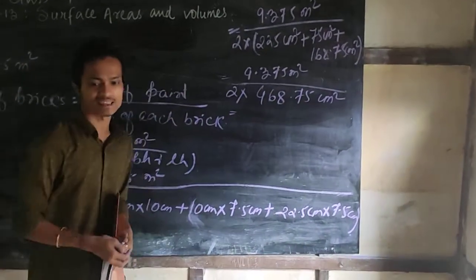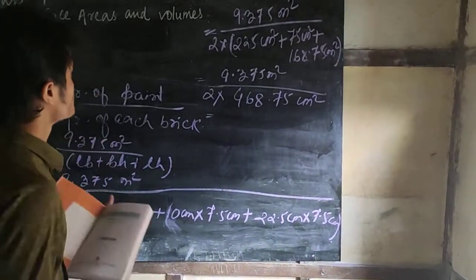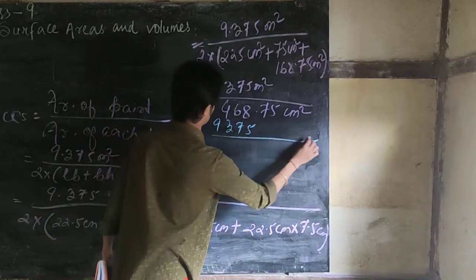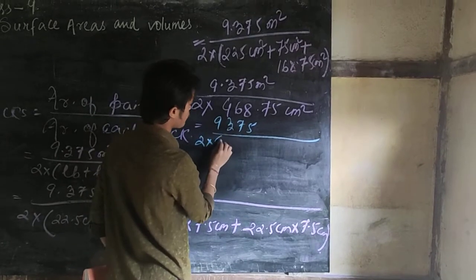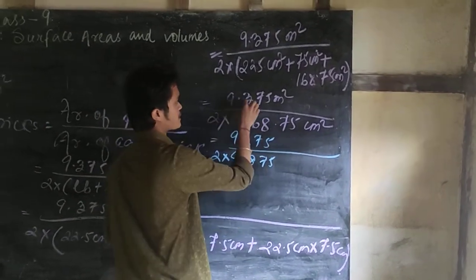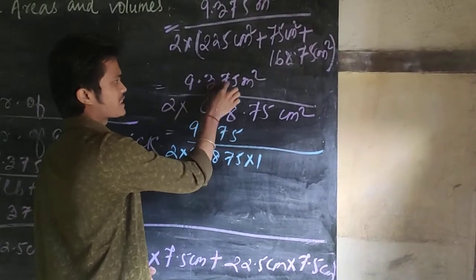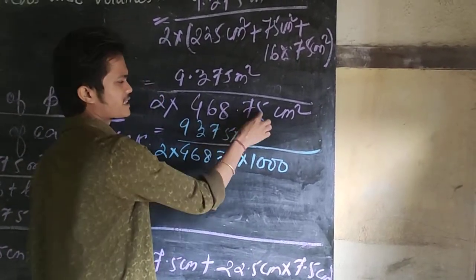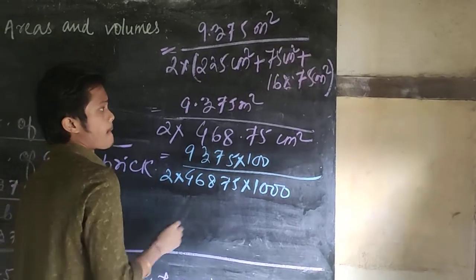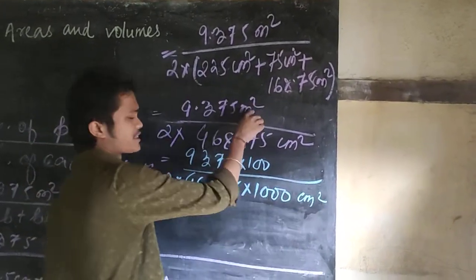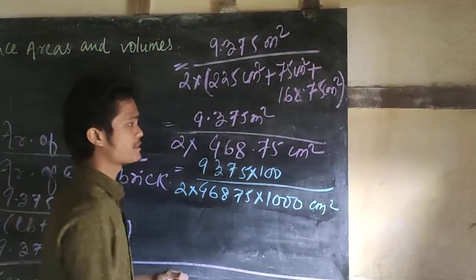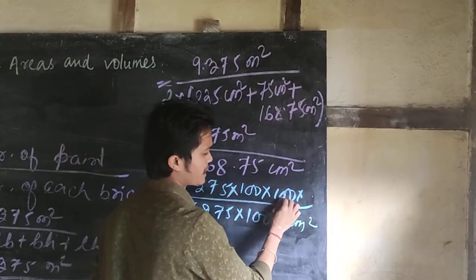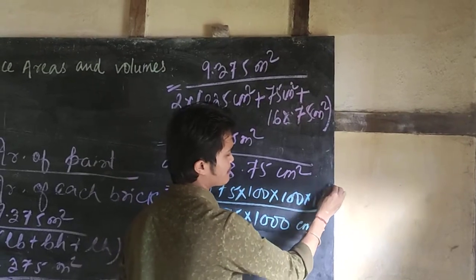Now let us remove the decimal: numerator is 9375, denominator is 2 into 46875. The numerator has 3 digits after the decimal and the denominator has 2 digits after the decimal. Also, the area of paint is in meters squared while the brick area is in centimeters squared, so we need to convert meters squared to centimeters squared. Since 1 meter = 100 centimeters, 1 meter squared = 100 × 100 = 10,000 centimeters squared.